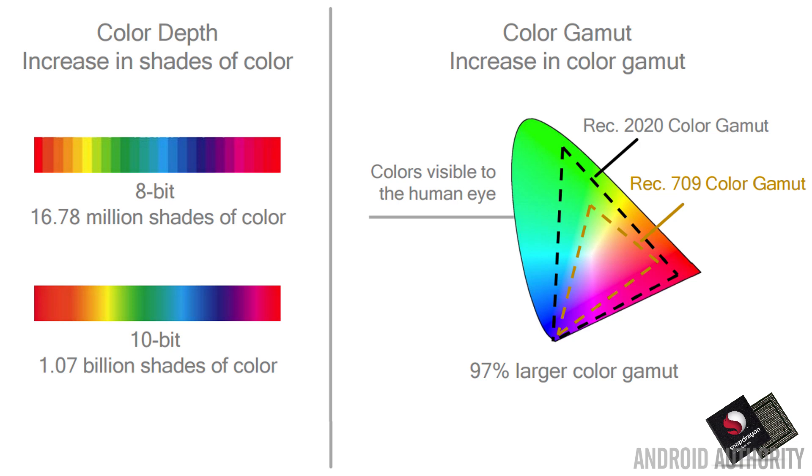REC 2020 defines an area that takes in about 76% of the visible spectrum. To get that level of color we need to move beyond 8-bit encoding into 10-bit or 12-bit. In 10-bit encoding there are now a thousand types of red, a thousand types of green, and a thousand types of blue, and combined together you get over a billion different types of color.